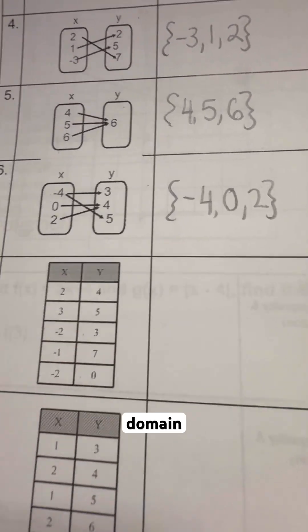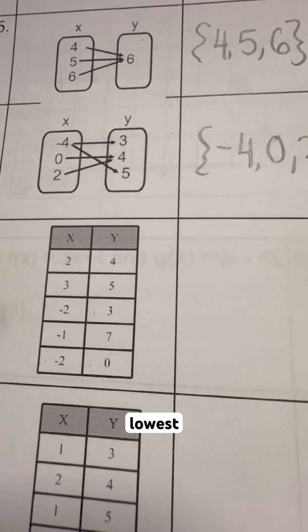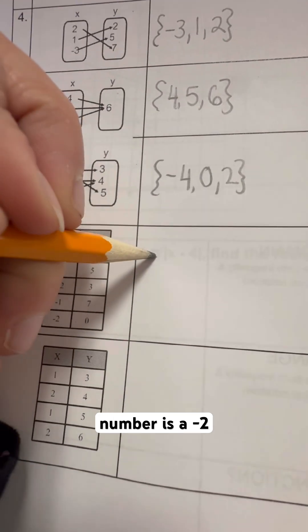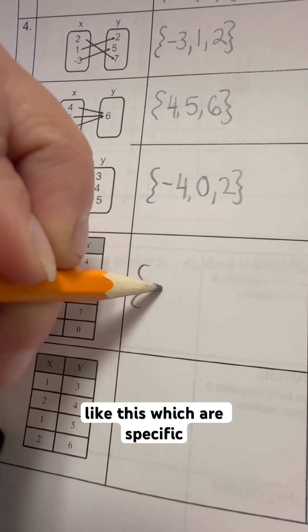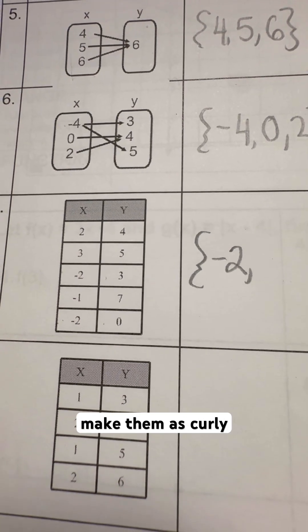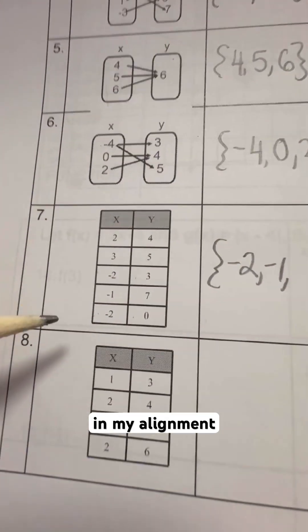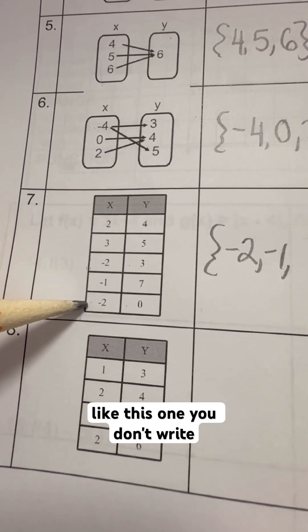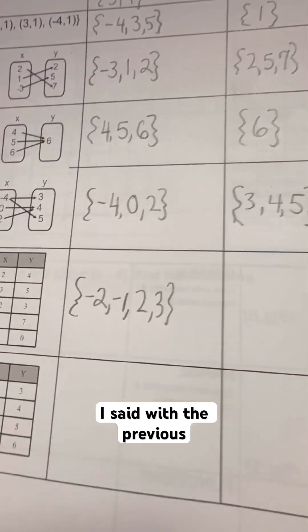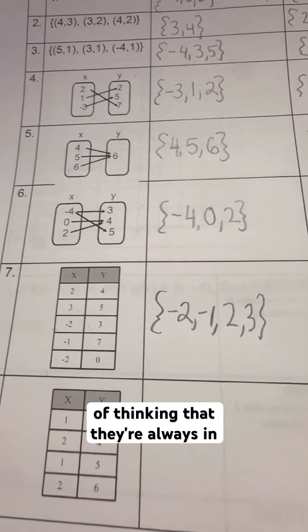When we're doing our domain, we start from lowest to highest. Our lowest number is negative 2. When doing discrete graphs like this — which are specific points — we always write the curly brackets. Negative 1 is the next number. If you have a repeat, you don't write it twice. We have 2 and then 3. These are not in order, so don't get into the habit of thinking they're always in order.